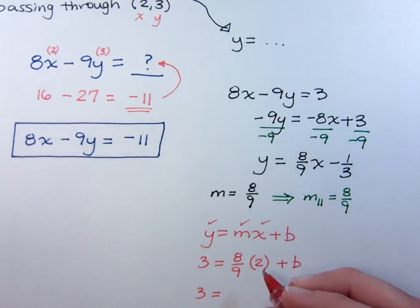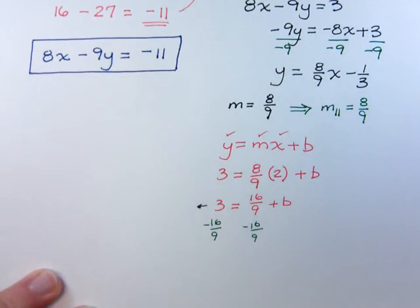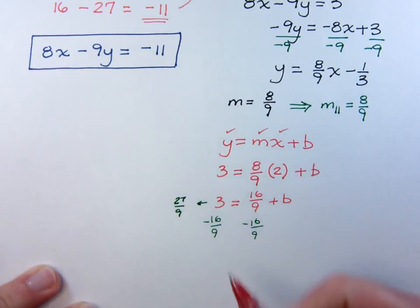3 equals 16 over 9 plus b. Subtracting 16 over 9 from both sides, and go ahead and convert this 3 into 9ths. So, that's going to be 27 over 9. 27 minus 16 is going to give you 11, and then over 9 is equal to b.